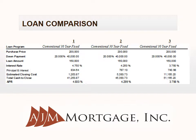In column 1, although the interest rate and payment are the highest, the cash needed at closing is the lowest. In column 3, the interest rate is the lowest but the cash needed at closing is the highest.